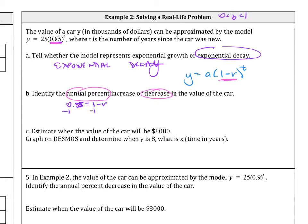So then you subtract 1 from both sides, and what you end up getting is negative 0.15 equals negative r. And you have to have r as positive, so you divide by a negative 1. So therefore, r equals 0.15.